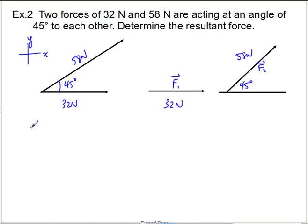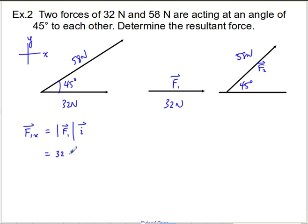If I break these up into their vector components, F1 in the x-direction equals the magnitude of F1 times the cosine of the angle it makes with the x-axis. Since F1 lies entirely in the x-direction, it's just 32 times the i vector. And F1 in the y-direction is 0 in the j-direction, since it has no contribution in y.